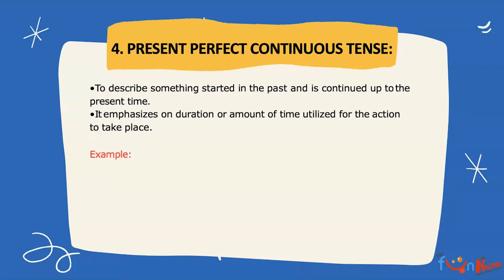Let's see some examples. The first one is you have been telling a lie. We have not been playing cricket. We have been believing this. She has been singing a song.